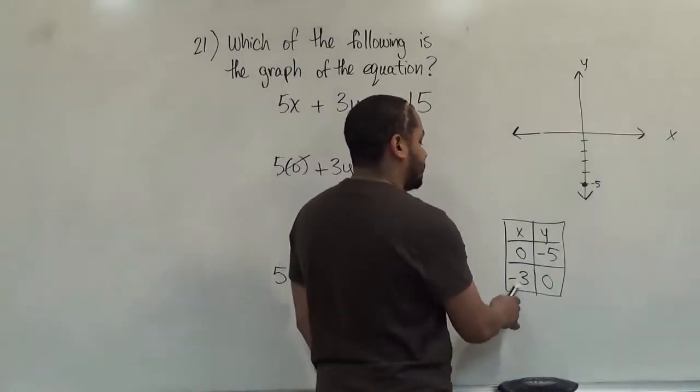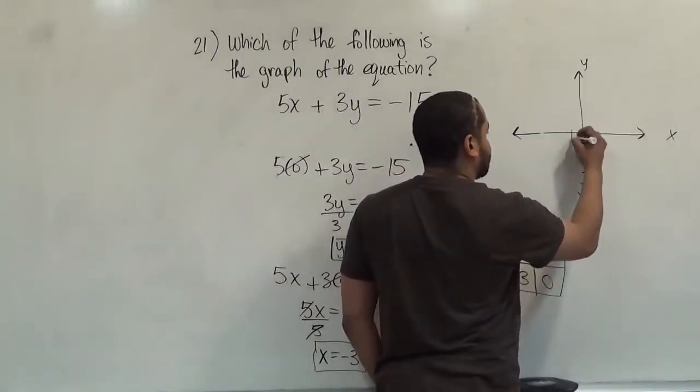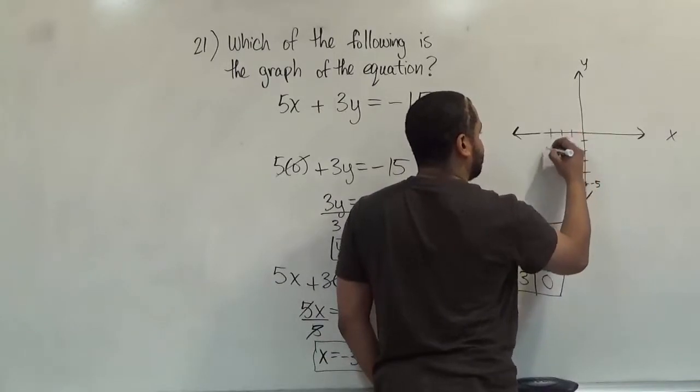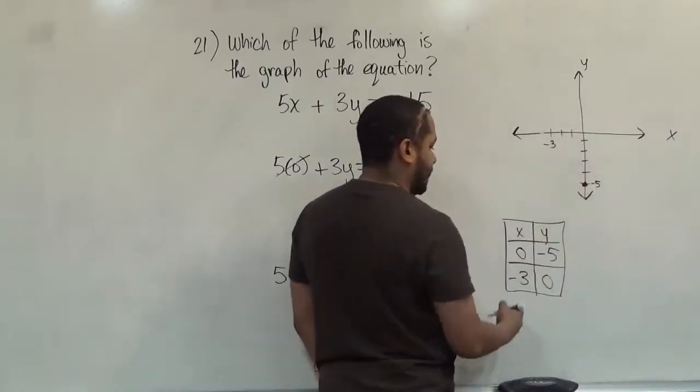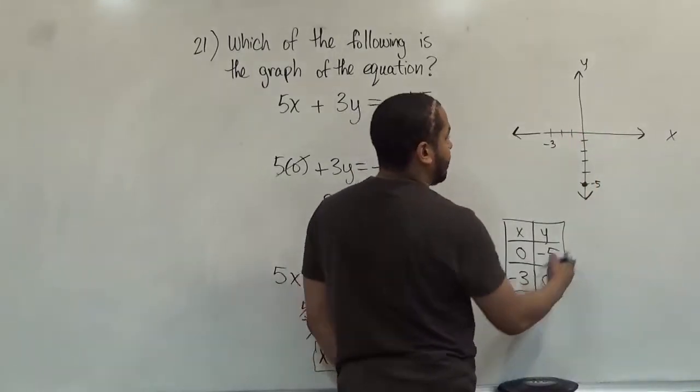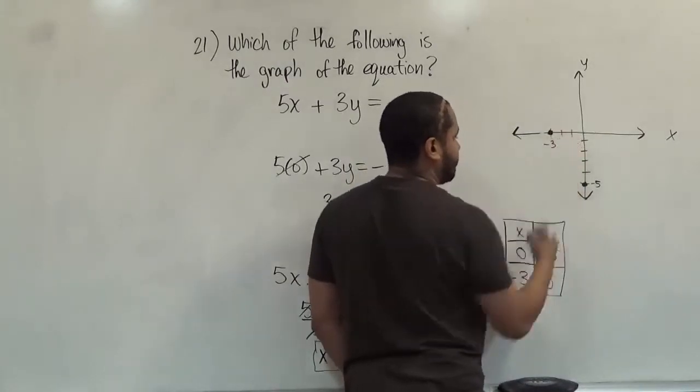Now this time my x value is negative 3. So we're going to move over 3 units from the origin, which leaves us here. And we're going to move up no units for the y. So it's going to stay right here. And here's our second point.